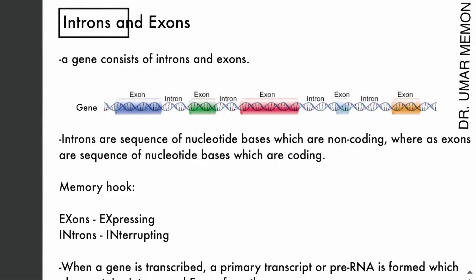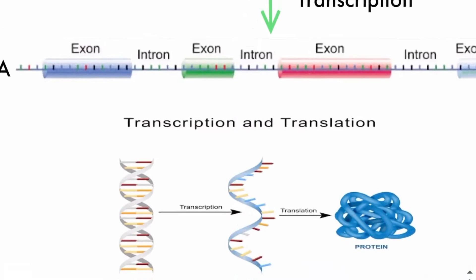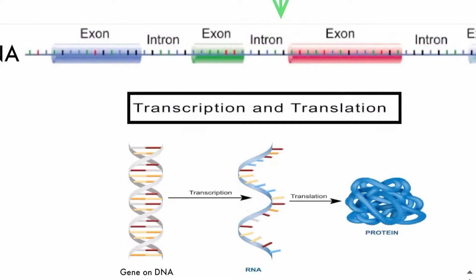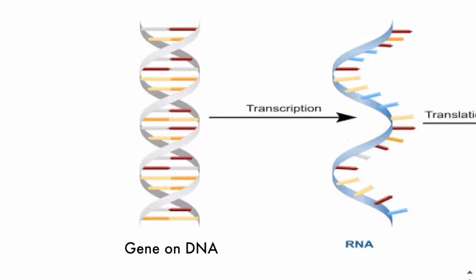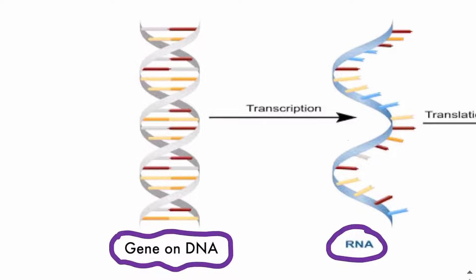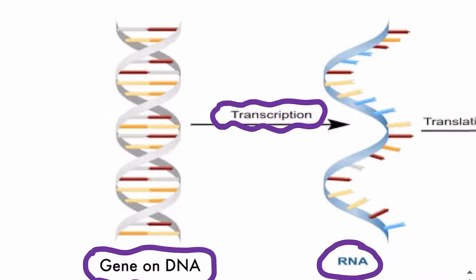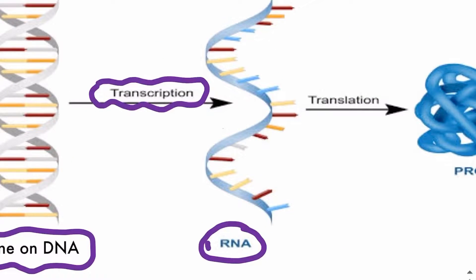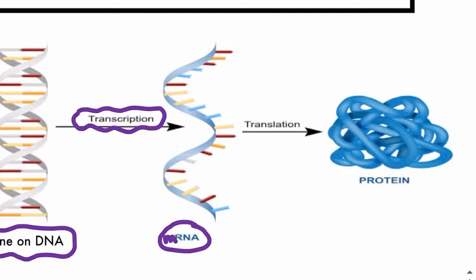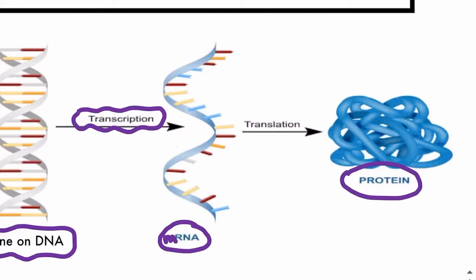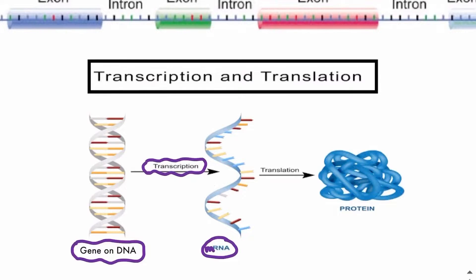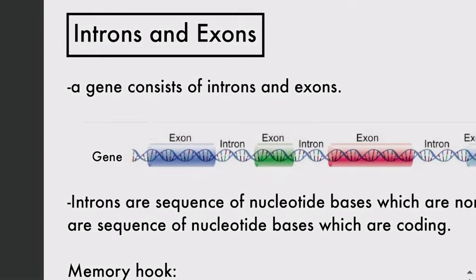In this video lecture we will be discussing introns and exons. Before we discuss introns and exons we need to recall the basic concept of protein synthesis. Protein synthesis consists of two steps: transcription and translation. A specific gene on the DNA is transcribed to form messenger RNA, and then this messenger RNA goes and binds to the ribosome to form protein — a process called translation.